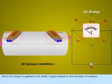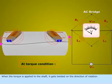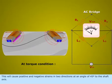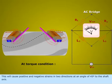When the torque is applied to the shaft, it gets twisted in the direction of rotation. This will cause positive and negative strains in two directions at an angle of 45 degrees to the shaft axis.